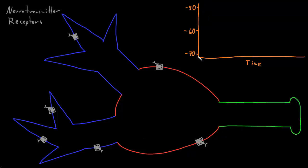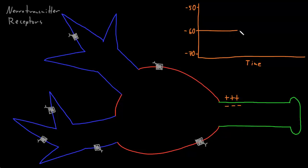Here's our graph looking at the membrane potential on the y-axis. I've put in a few values in millivolts: negative 50, negative 60, and negative 70. We'll have time on the x-axis. A resting neuron without inputs has a layer of positively charged ions on the outside of the membrane, and a layer of negatively charged ions on the inside, and the resting potential is often around negative 60 millivolts.